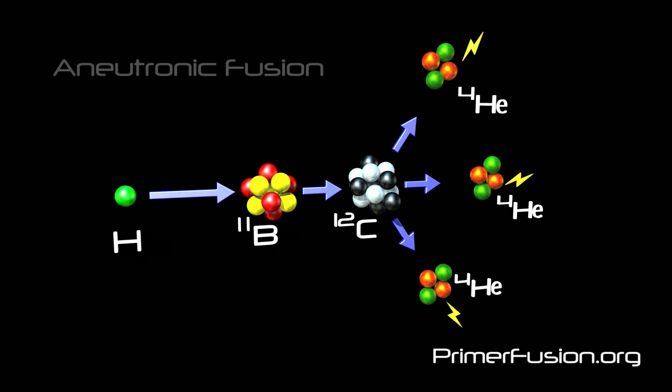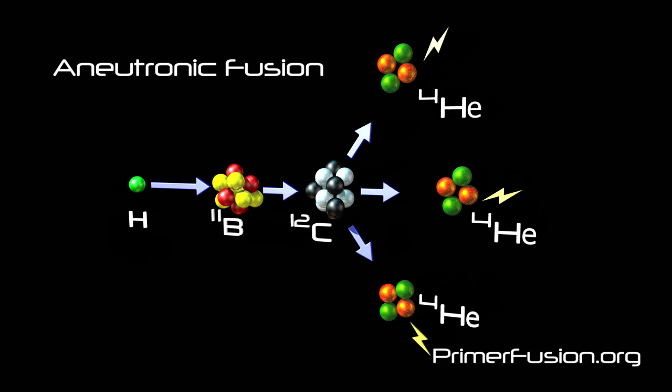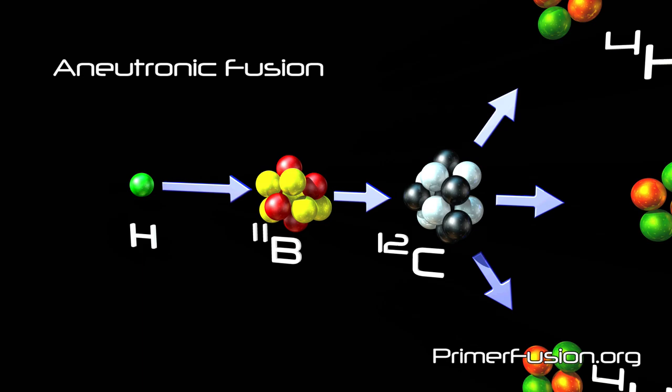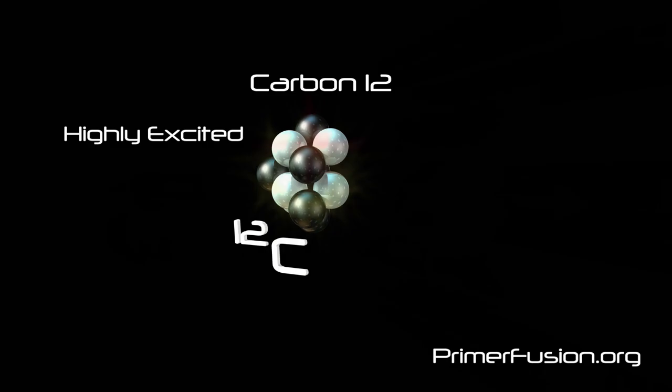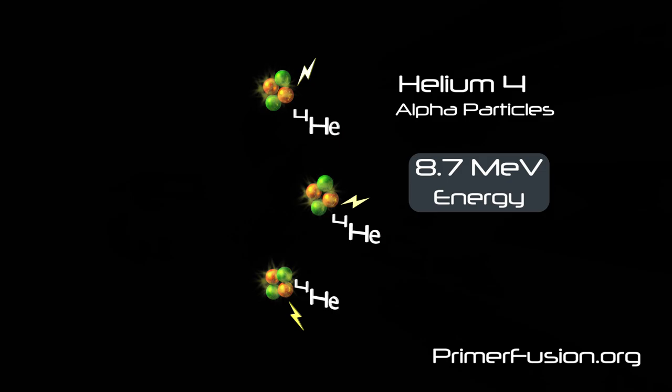This diagram represents the fusion of a hydrogen proton and boron-11. This process is referred to as aneutronic fusion because relatively few neutrons are produced when these two elements undergo fusion. Here we see a representation of a hydrogen proton and a nucleus of boron-11. When the hydrogen proton and the boron-11 nucleus fuse, they form a highly excited and very unstable nucleus of carbon-12 that almost instantaneously splits into three highly charged helium-4-alpha particles that fly off at high velocities.